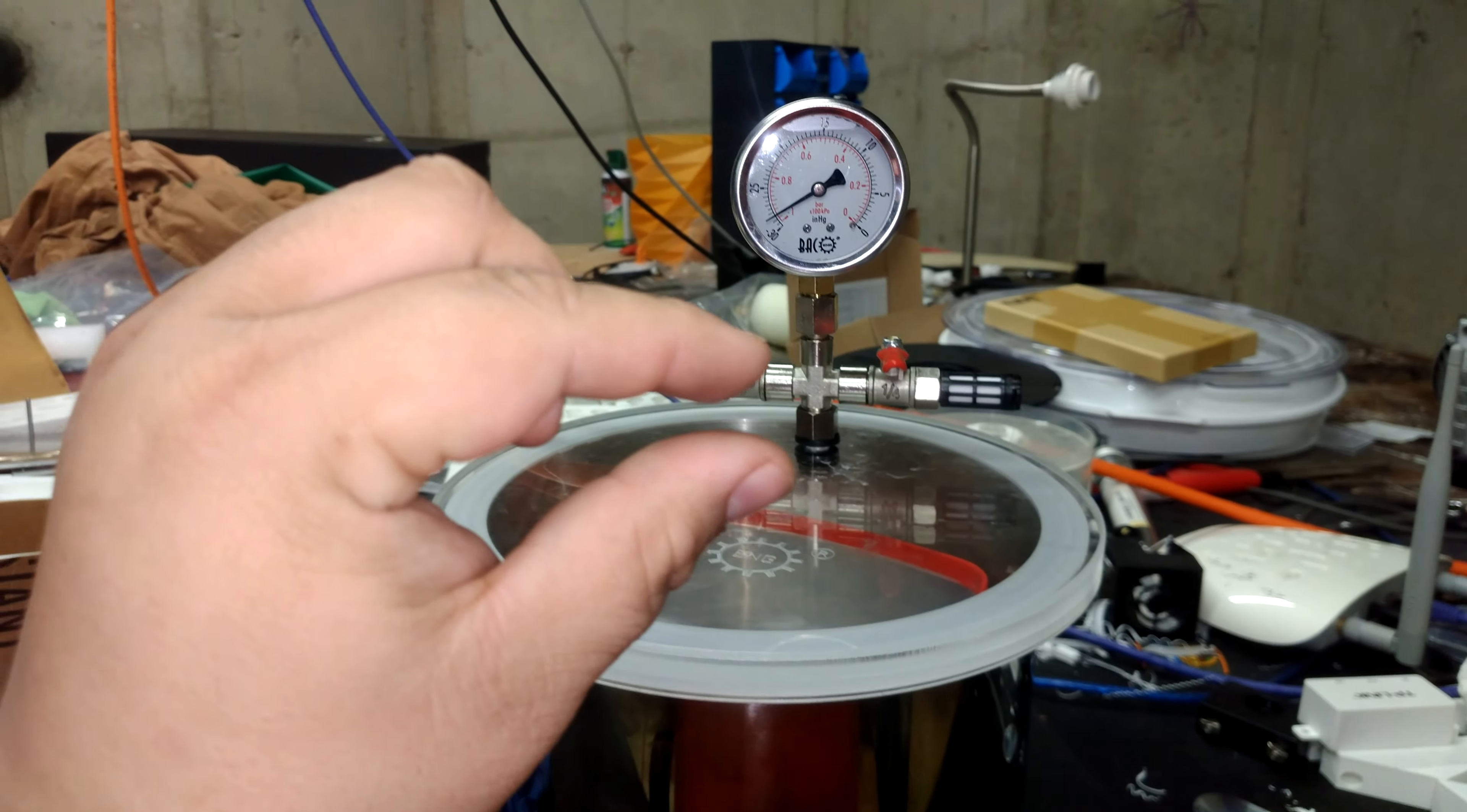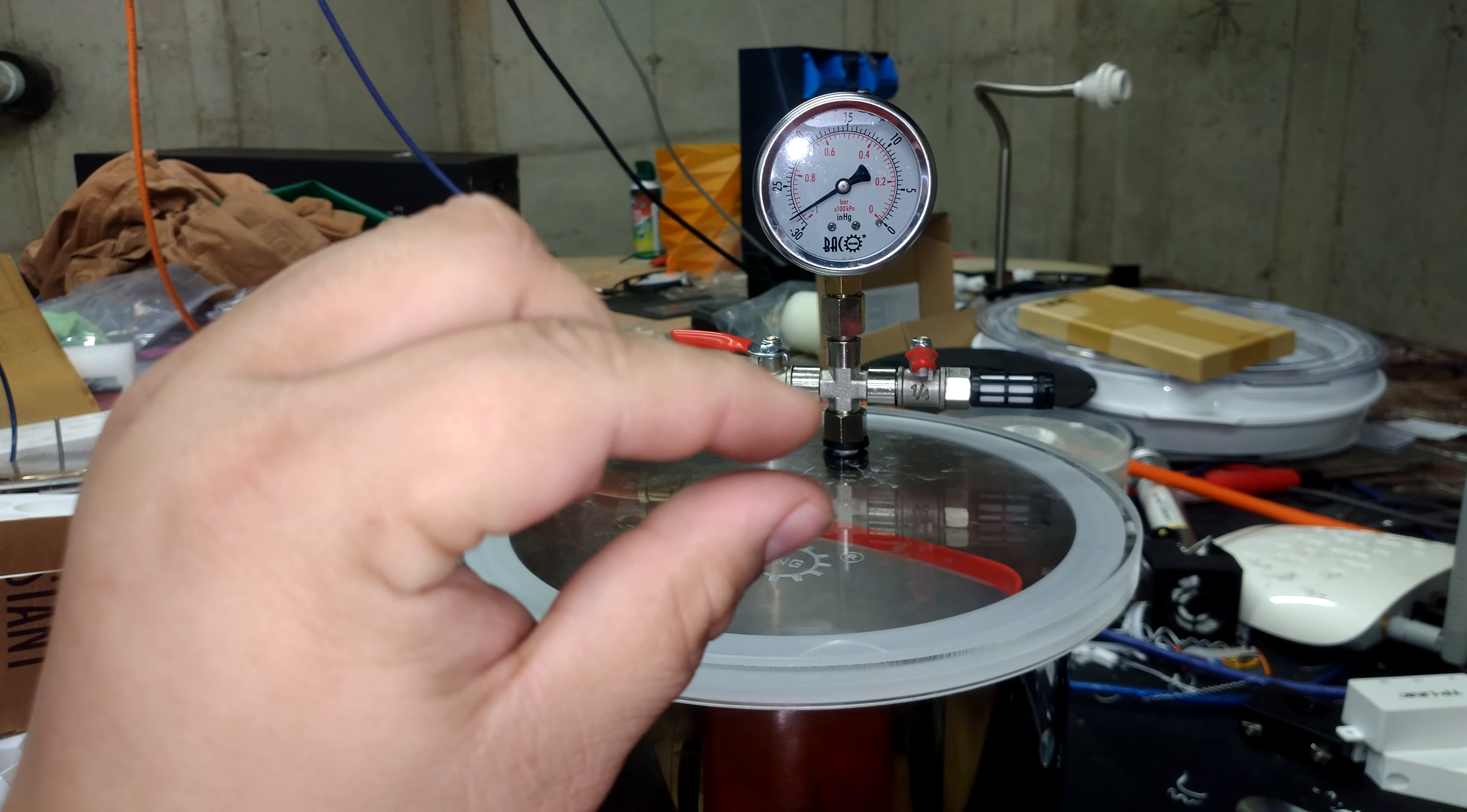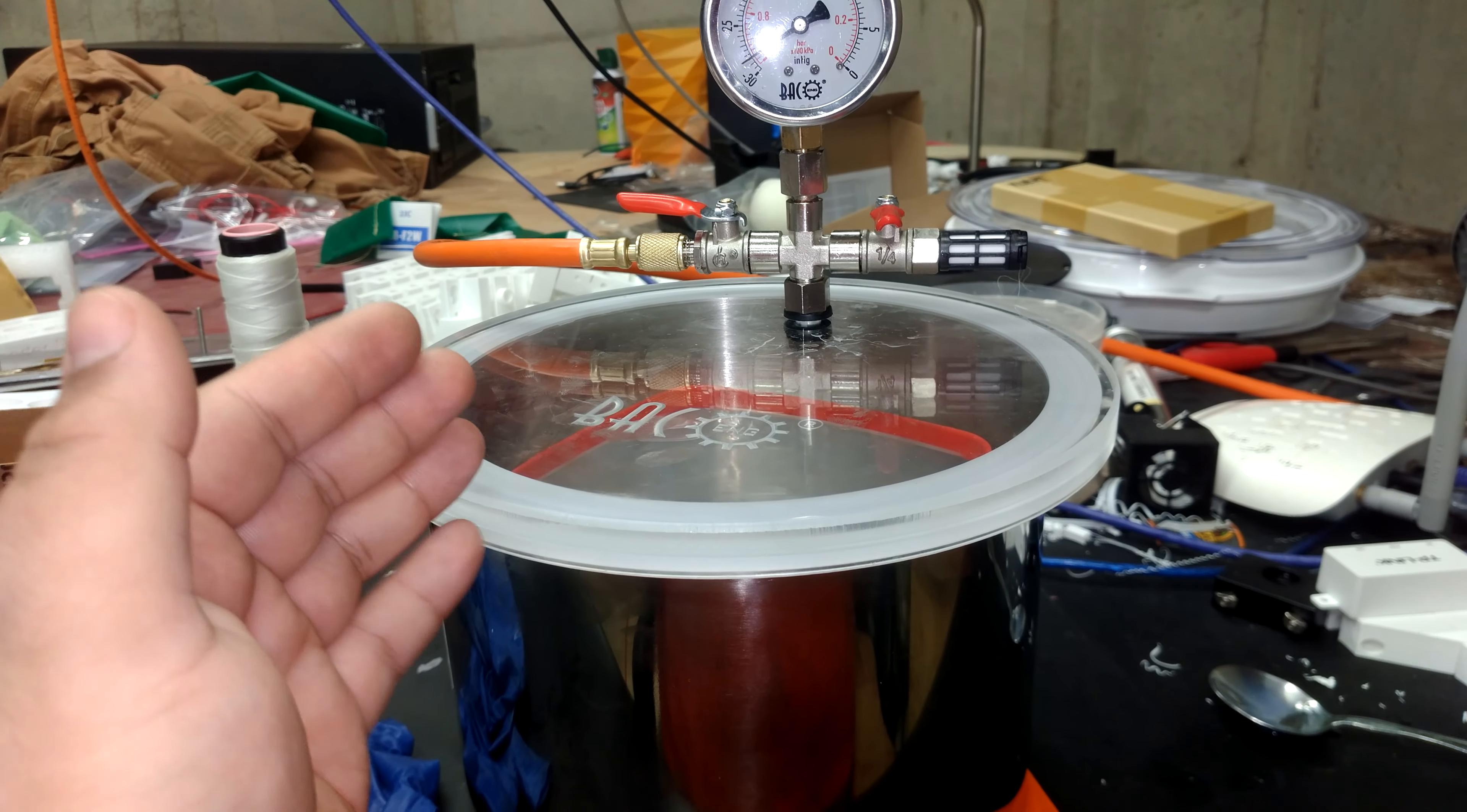A tiny warping does occur when under an intense vacuum for a long period of time, but that warping does not appear to be permanent nor does it seem to affect its capability of maintaining a vacuum.